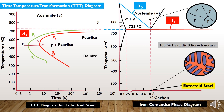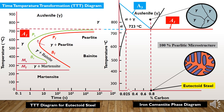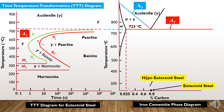To the right of Bs and Bf we have bainite, and in between these two lines we have austenite plus bainite. The horizontal Ms line indicates the temperature at which martensite transformation will start, and the horizontal Mf line indicates the temperature at which martensite transformation will finish. In between we have austenite plus martensite, and below these lines we have only martensite.